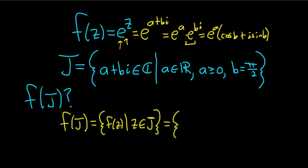This is the set. We know f of z is e to the z, so this is going to be e to the z such that z is in J. But we know if z is in J, it has this form, a plus bi.